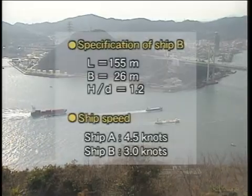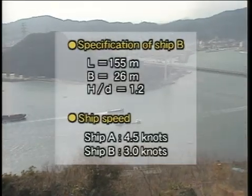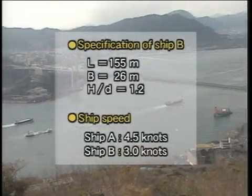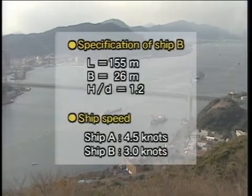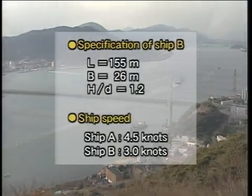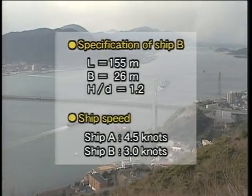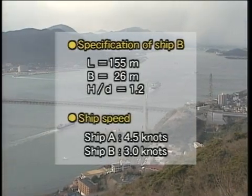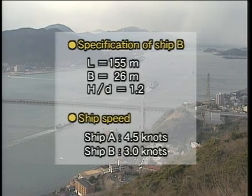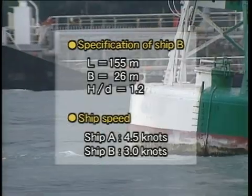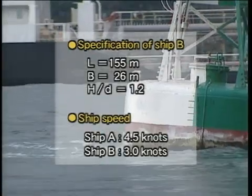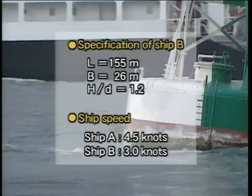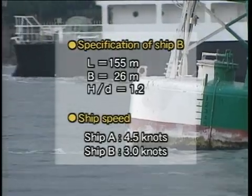The two ships are similar, and these figures represent the specifications of Ship B. Ship A runs at 4.5 knots and Ship B runs at 3 knots. The beam distance between the two ships is half of the ship length. The two ships are steered to maintain parallel courses.